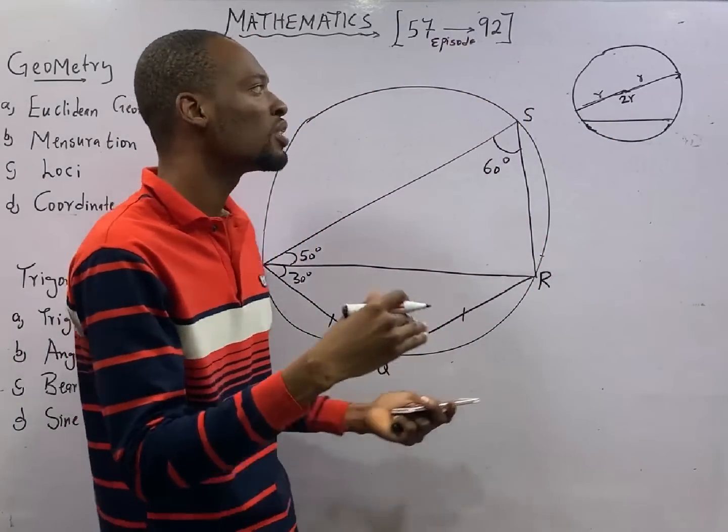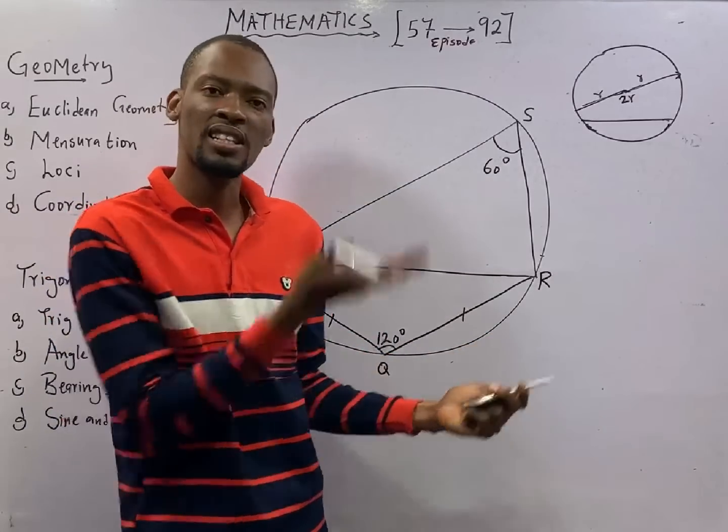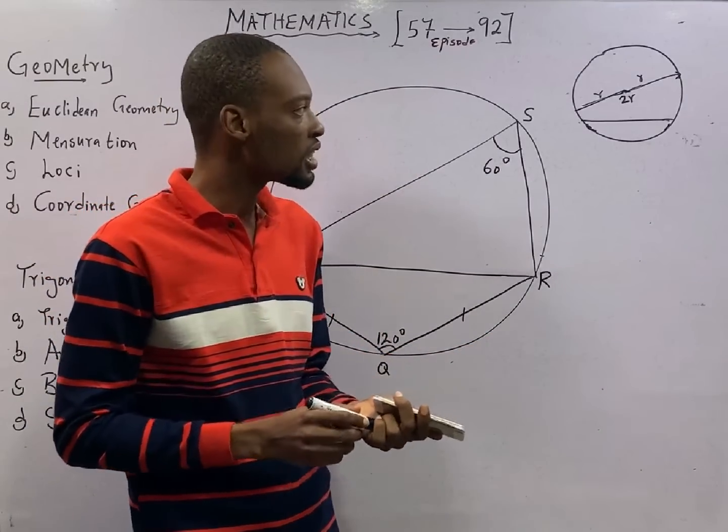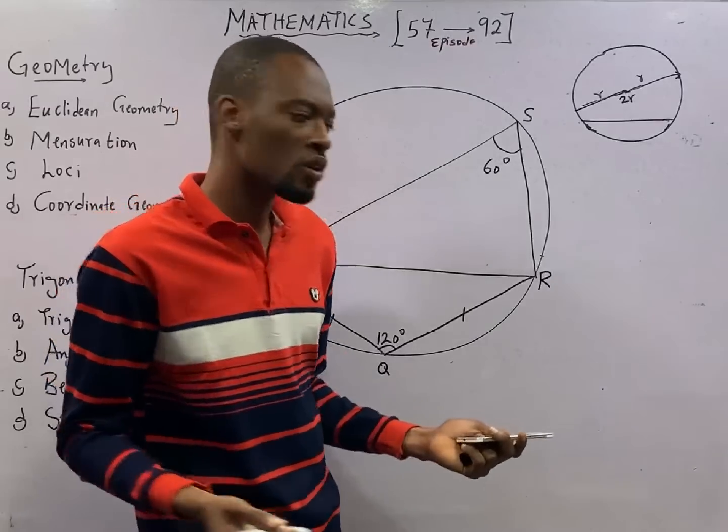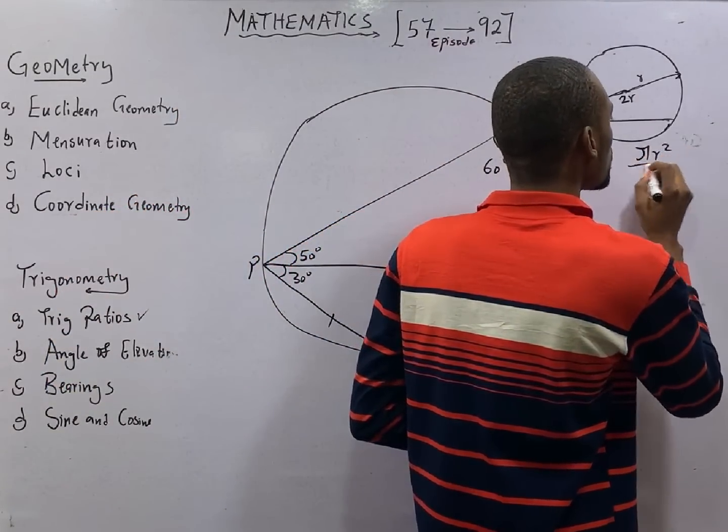If you cut the circle into equal halves, one side is referred to as a semi-circle. The other side is referred to as semi-circle. The area of a circle is pi R squared.